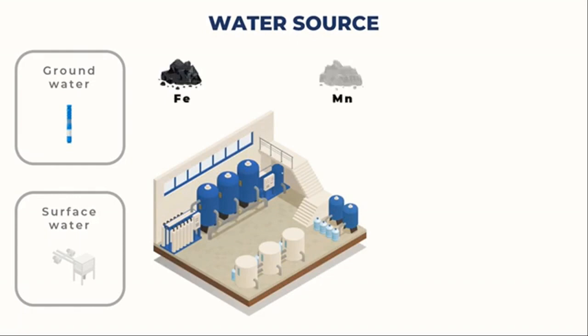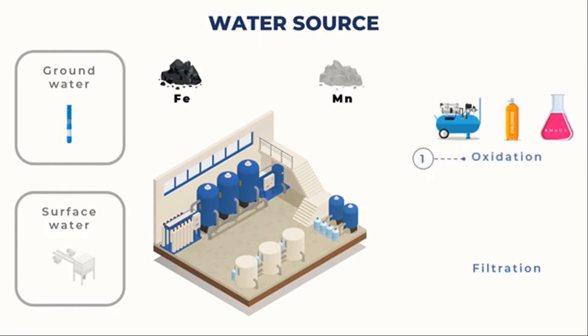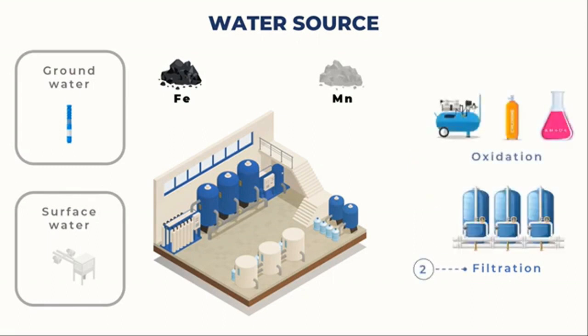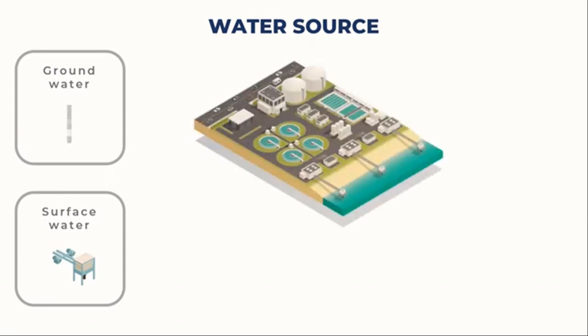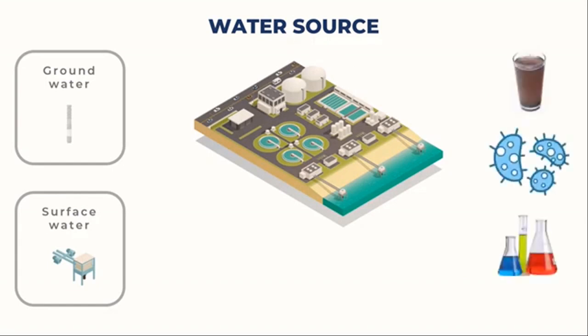In a typical two-stage oxidation-filtration process used in groundwater treatment facilities, oxygen, chlorine, or potassium permanganate are initially used to oxidize and precipitate iron and manganese. The water must then be filtered to get rid of precipitated particles. Because lakes, rivers, and streams have higher concentrations of debris, bacteria, and pollutants than groundwater, surface water generally needs more treatment than groundwater.